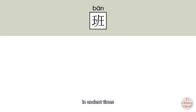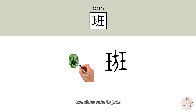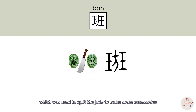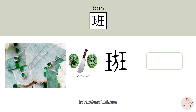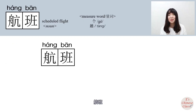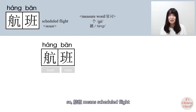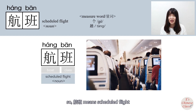In ancient times, 班 was written with two sides referring to jade and the middle part being an axe, which was used to split the jade to make accessories. So the original meaning of this character is split. In modern Chinese, 班 means class. So 航班 — 航 means boat, 班 means class — and together 航班 means scheduled flight.